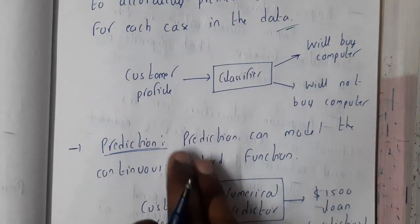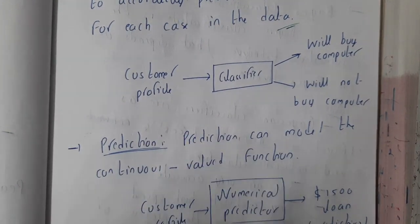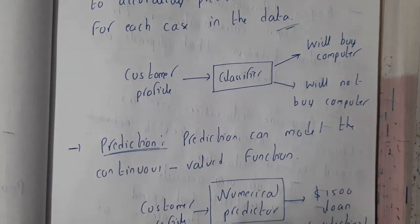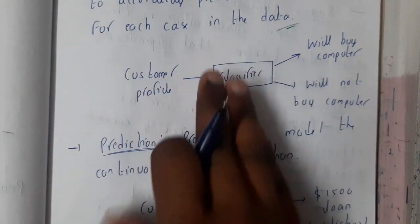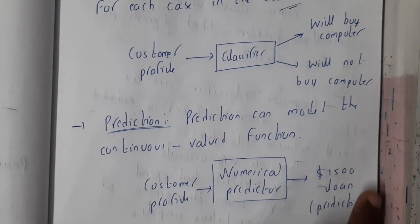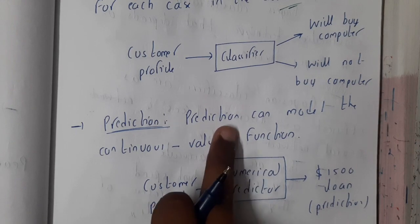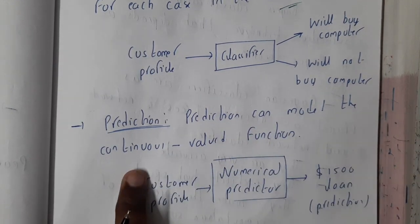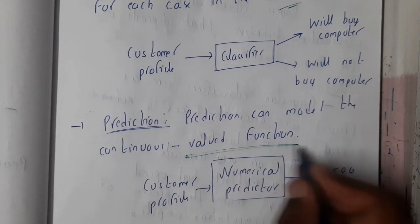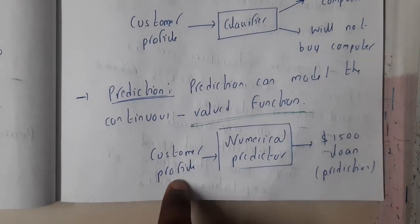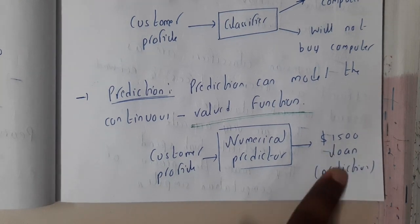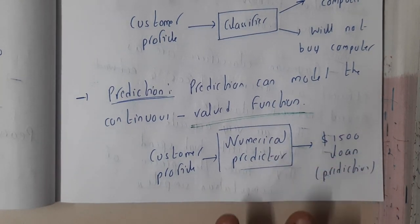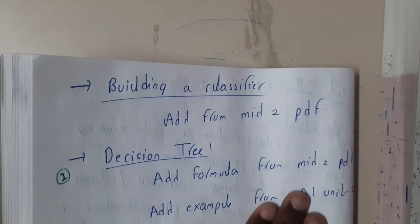The next confusing word is prediction. Most students will be confusing between classification and prediction. Remember, classification is identifying into one particular class, whereas prediction is identifying the exact value. Prediction can model continuous valued functions. For example, customer profile as a numerical predictor - it might say fifteen hundred dollars.